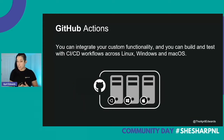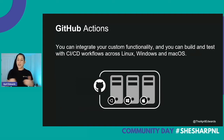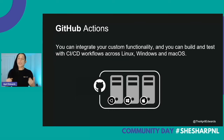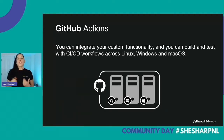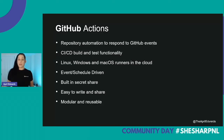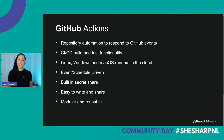GitHub took that feedback and revamped GitHub Actions as we know them today. This new version runs workflows on virtual machines — Windows, Linux, and Mac — just like Azure DevOps does. If you're developing for Mac or Apple operating systems, you can test on this platform. You don't have to run a Docker container anymore. This gave parity to Azure DevOps and answers the question of what the difference is between the two tools.